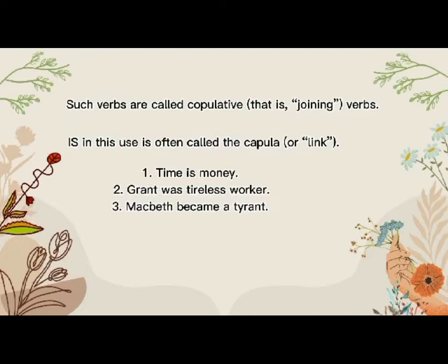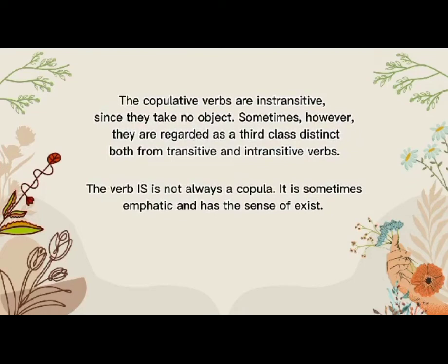Examples of copulative verbs: Number one — 'Time is money,' where 'is' is the copulative verb. Number two — 'Grant was a tireless worker,' where 'was' is the copulative verb. Number three — 'Macbeth became a tyrant,' where 'became' is the copulative verb. The copulative forms are intransitive since they take no object, though sometimes they are regarded as a third class distinct from both transitive and intransitive verbs. Note that the verb 'is' is not always a copula — it is sometimes emphatic and has the sense of existence.